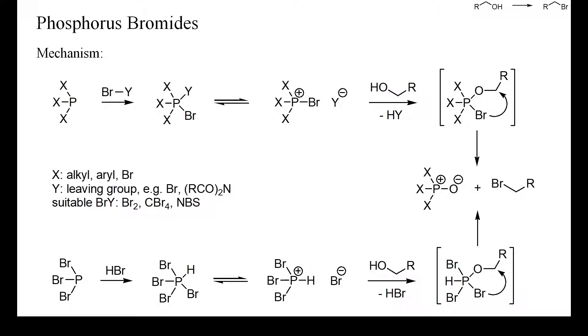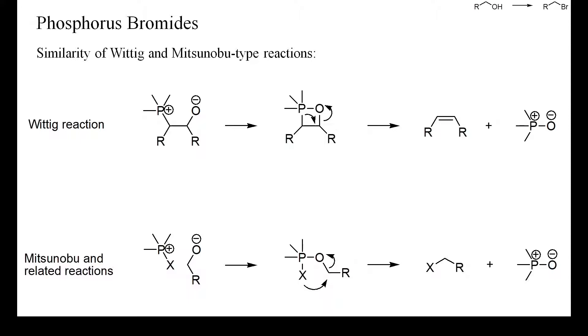These reactions are closely related to the Mitsunobu reaction and proceed by intermediate formation of a pentavalent phosphorus bromide or a phosphonium bromide. These intermediates react with alcohols, even without any base, to yield a pentavalent alkoxyphosphorus derivative which decomposes into a phosphine oxide and the alkyl bromide. Similar intermediates are also likely to be formed when alcohols are deoxybrominated by phosphorus tribromide without any added base. Both the Wittig and the Mitsunobu reaction are mechanistically related, as I have tried to sketch on this slide.